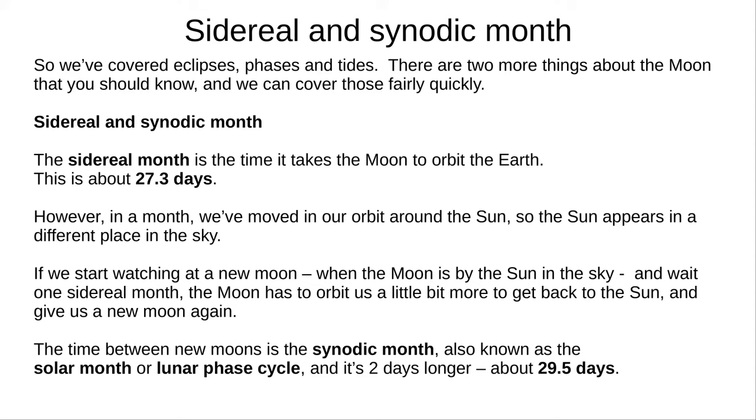However, in a month, we've moved quite a bit in our orbit. The Sun appears to be in a different place in the sky. If we see a new Moon, and then wait one sidereal month, the Moon will be out of sync, and we'll have to orbit us a bit more to give us our next new Moon.